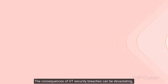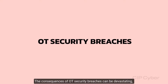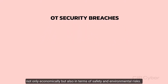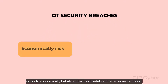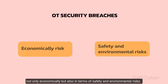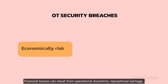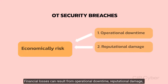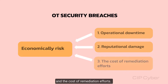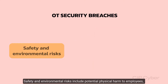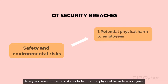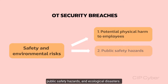The consequences of OT security breaches can be devastating, not only economically but also in terms of safety and environmental risks. Financial losses can result from operational downtime, reputational damage, and the cost of remediation efforts. Safety and environmental risks include potential physical harm to employees, public safety hazards, and ecological disasters.